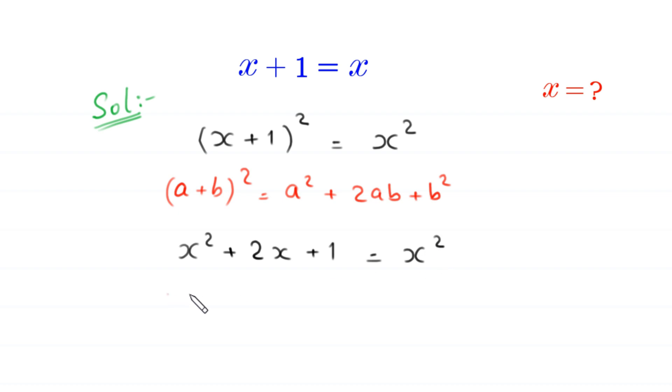So, we subtract x² from both sides. This gets cancelled and this gets cancelled, and here we are left with 2x + 1 equals 0.